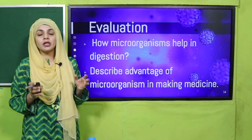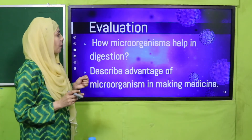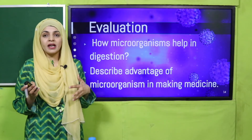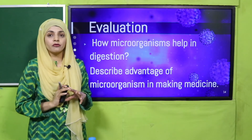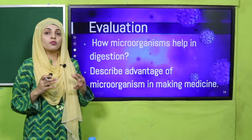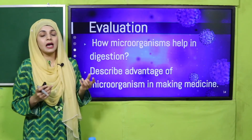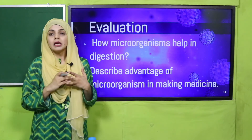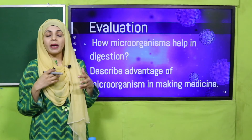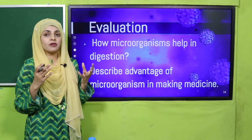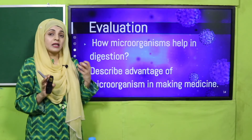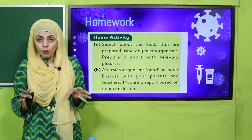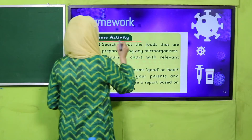For your evaluation, listen to the questions carefully. How do microorganisms help in digestion? Some bacteria live in our small intestine and break down food, helping the digestive system digest food into smaller particles. Describe the advantages of microorganisms in making medicines: different antibiotics are made from different microorganisms to treat diseases — for example, penicillin is made from Penicillium fungi.